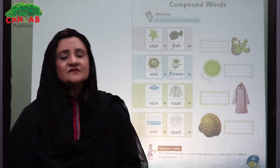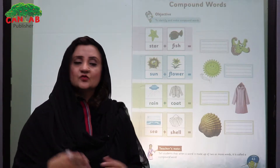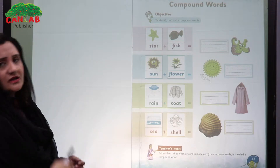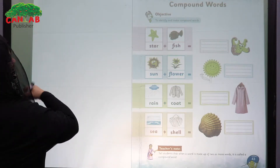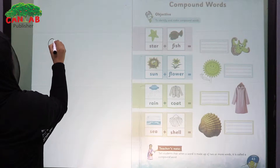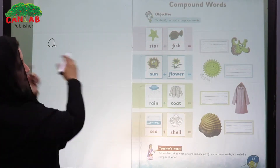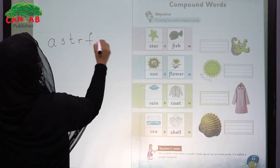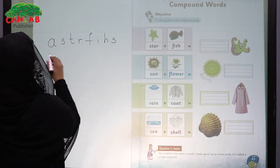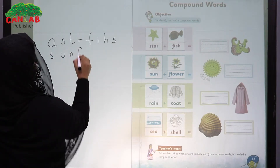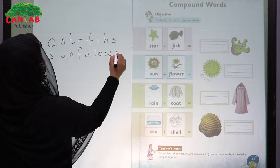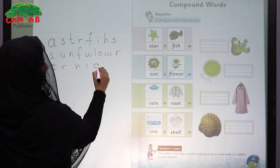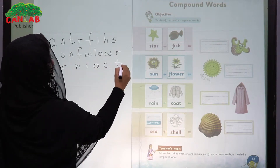After singing the song, you may invite some students to come and write a few letters on the board. For example, you can call Ali: 'Please come and write down letter A for me.' Ali is going to write letter A for you. In this way, we ask them to come one by one and write letters for us — it's like having a board dictation.